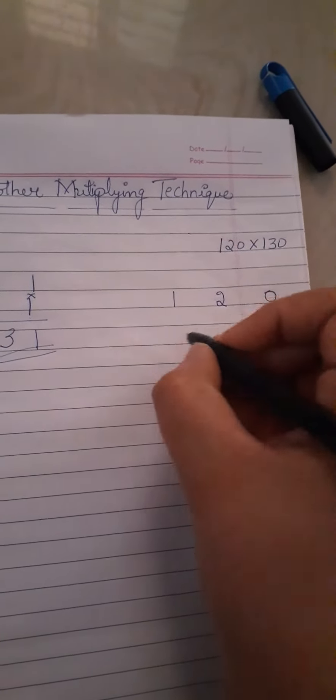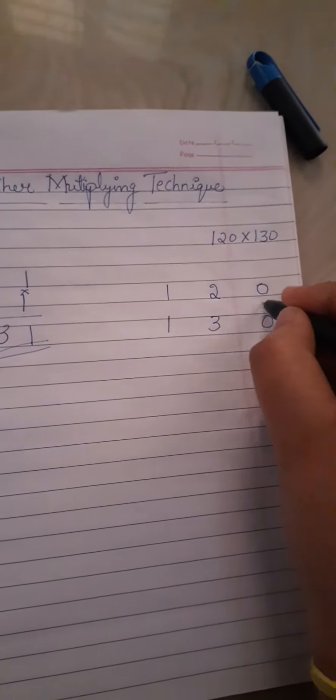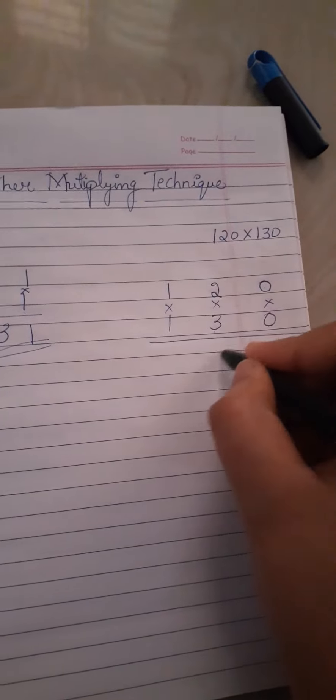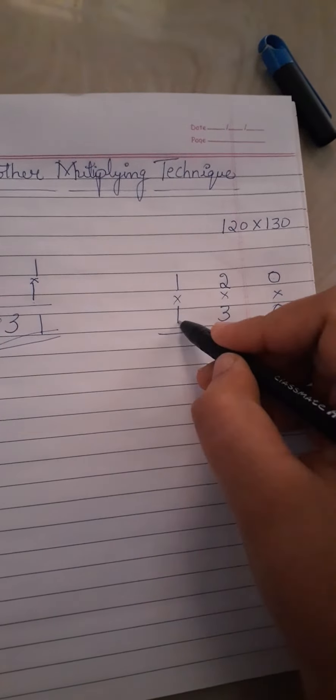How we have done like that only we will do. 120 and 130 we have written, right? So first we'll multiply 0 into 0 is 0. 3 times 2 is 6. 1 times 1 is 1. Okay, just we need to do like this, okay?